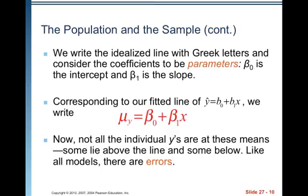We write the idealized line with Greek letters and consider the coefficients to be parameters. Beta naught, beta with a subscript of 0 is the intercept and beta 1 is the slope.